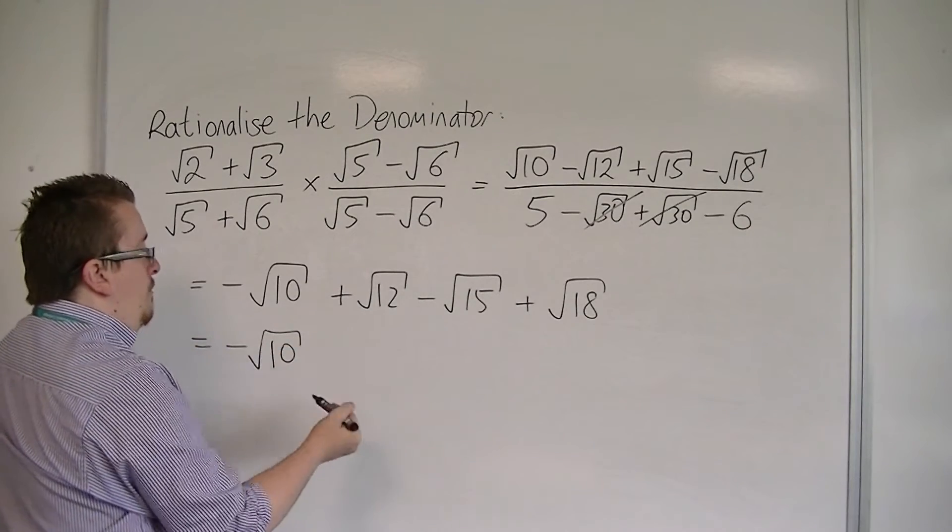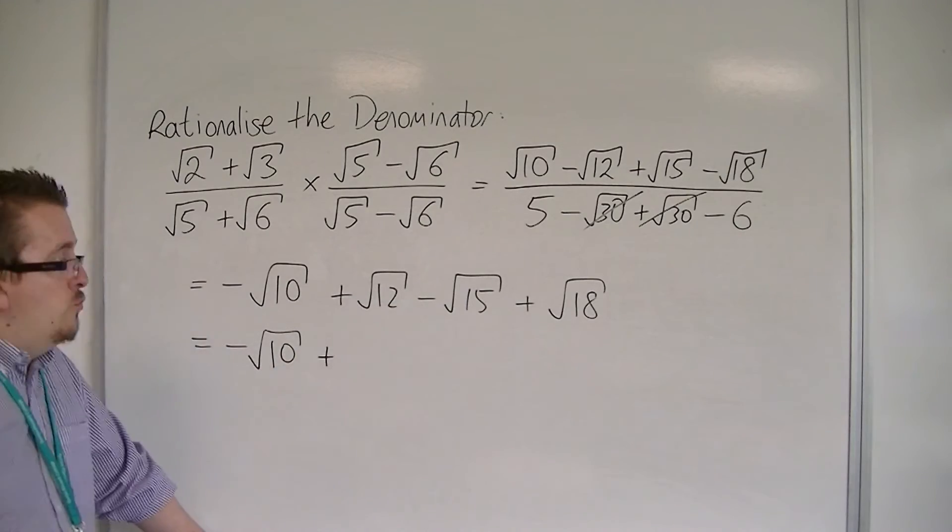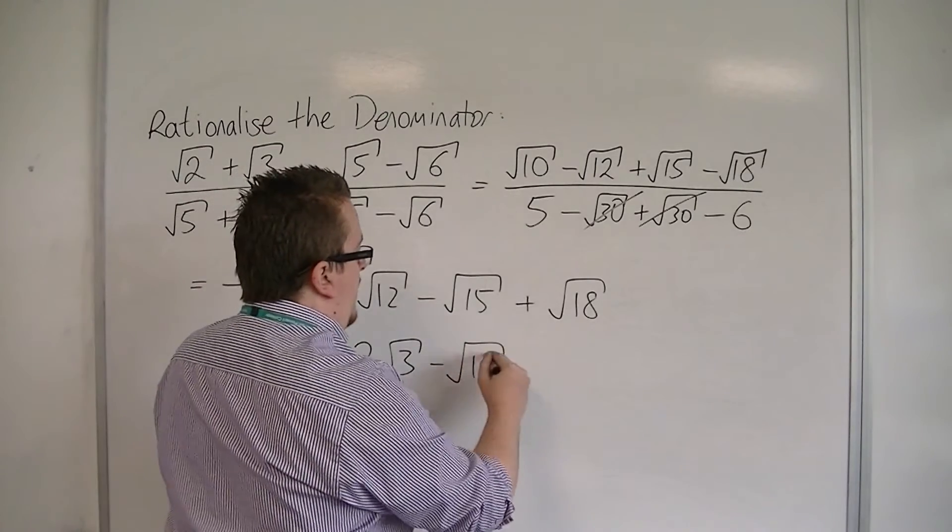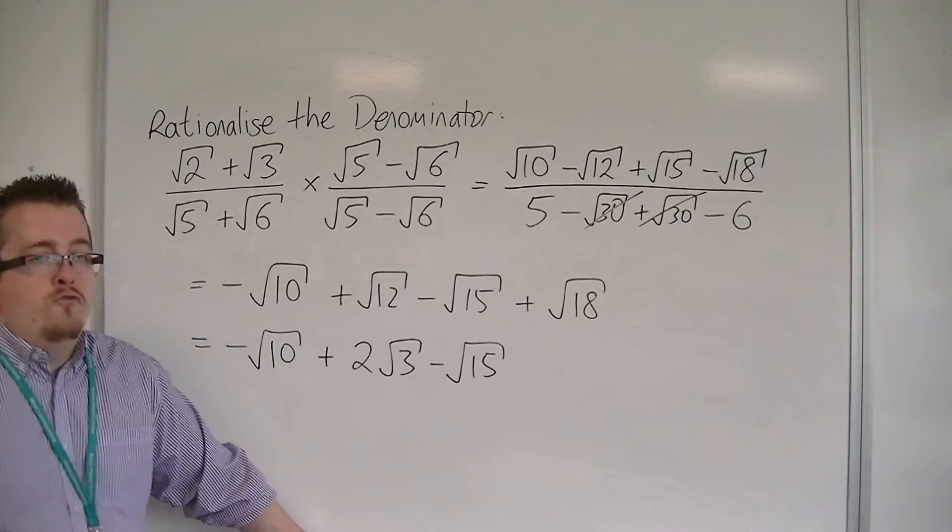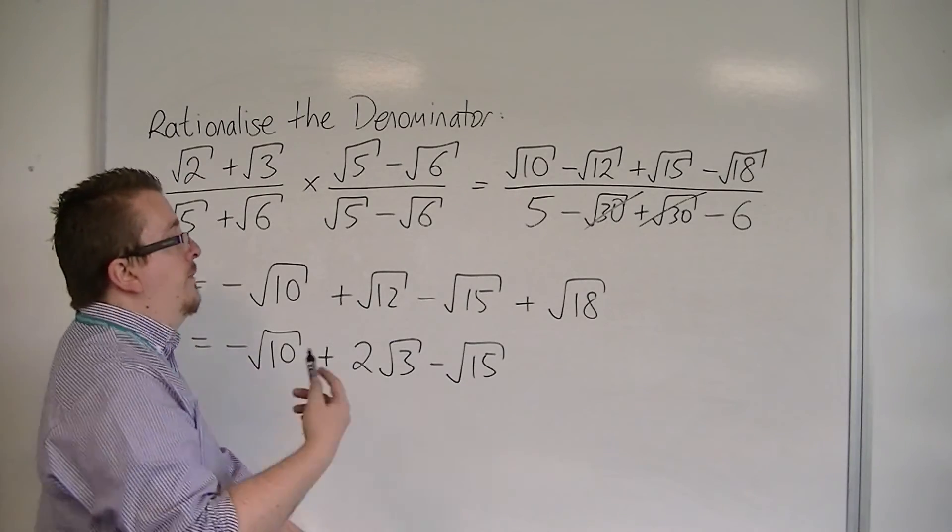So I could write this as minus root 10 plus, well, 12 is 4 times 3, so that's 2 root 3. Minus root 15, that can't change. Then I've got root 18, which is 9 times 2, so I've got 3 root 2.